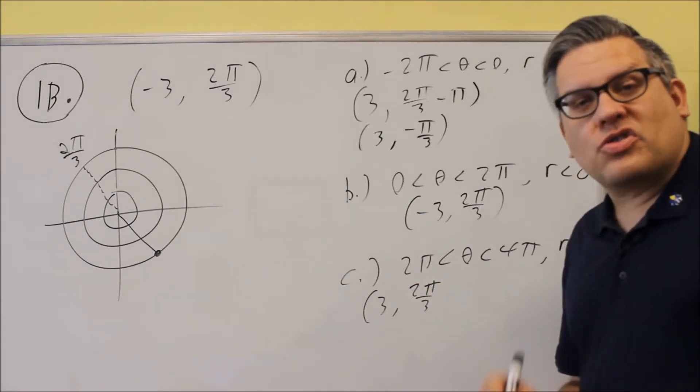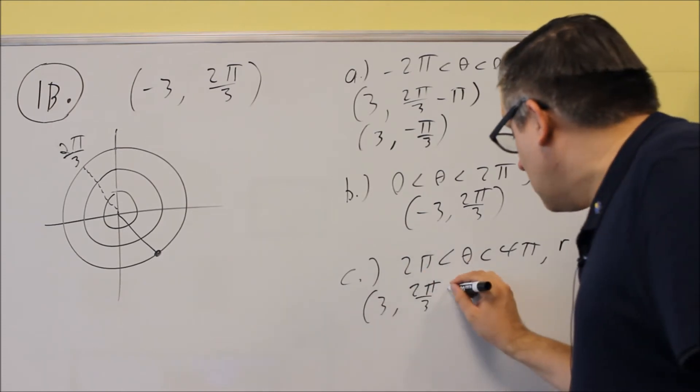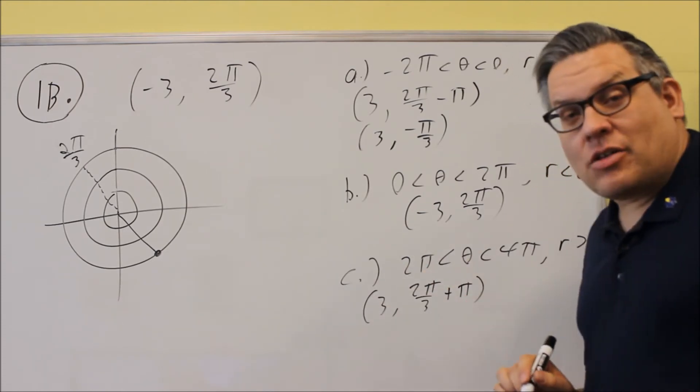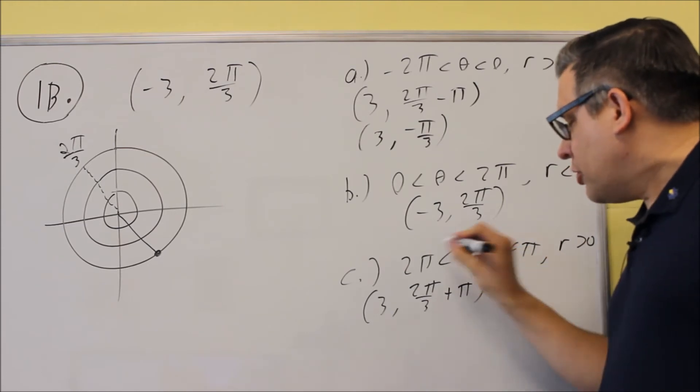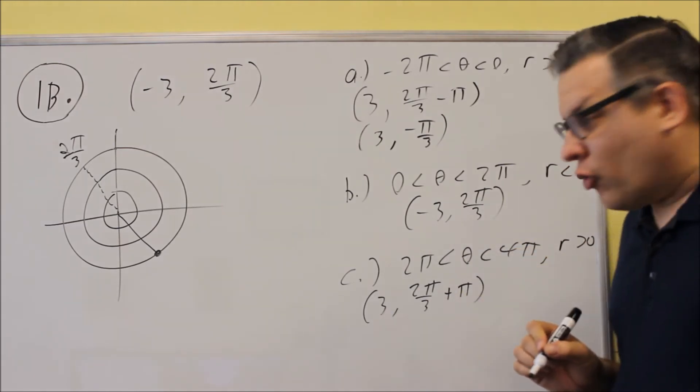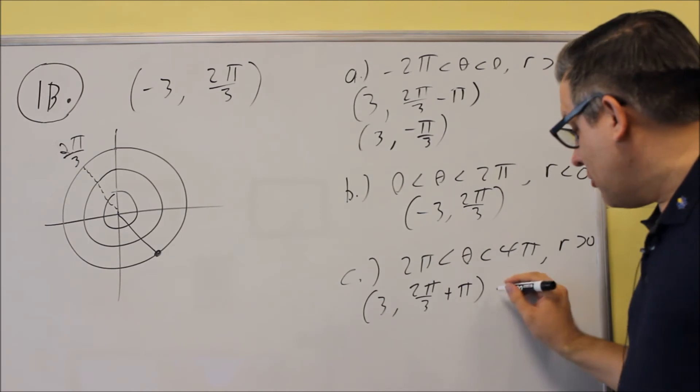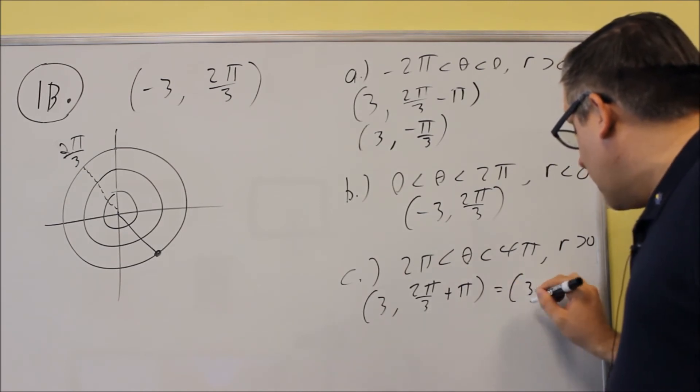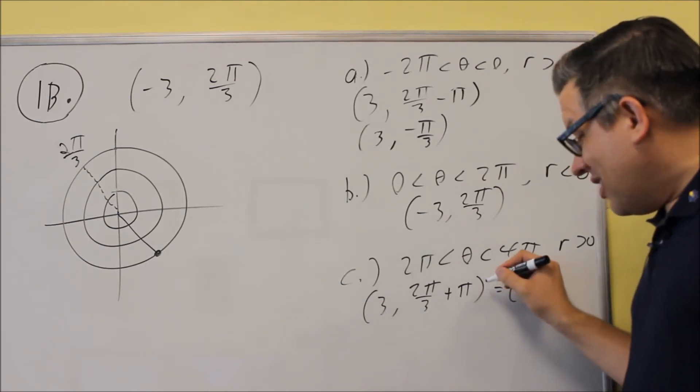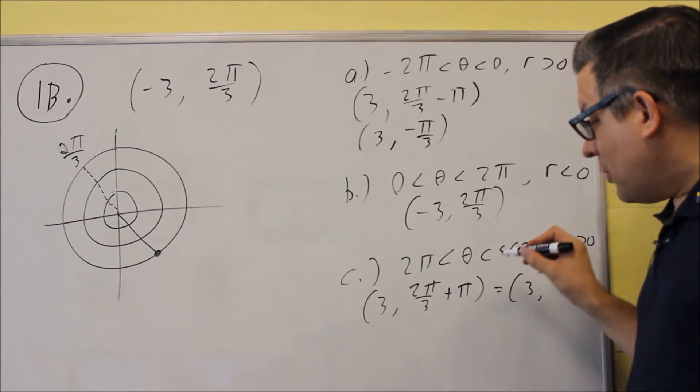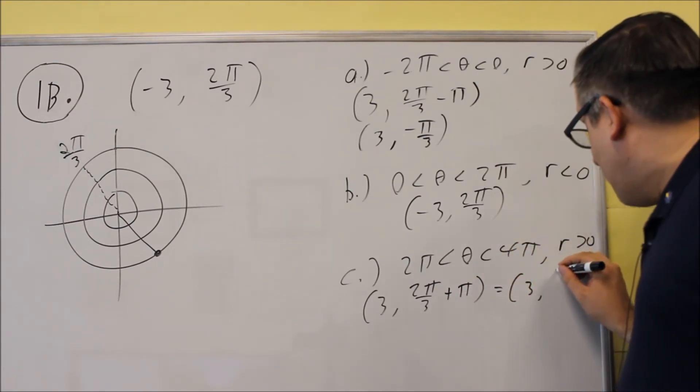and I can either choose to add or subtract the π, so I definitely want to add it, because I need to have the angle ultimately be between 2π and 4π. So I'm going to add π this time, and the answer I get is, so 2π over 3 plus 3π over 3, that's 5π over 3.